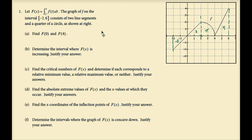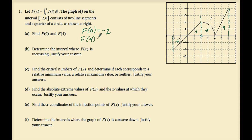Let uppercase F of x equal the integral from 2 to x of lowercase f of t dt. The graph of f on the interval negative 2 to 6 consists of two line segments and a quarter circle, as shown. The lower endpoint of integration is 2 — our starting point. Areas marked: this triangle is negative 2, this is positive 2, this quarter circle is pi, and this is 4. To find F of 0: starting at 2 and going back to 0, the area is 2, but moving backwards means the function value is negative 2. For F of 4, from 2 to 4 moving to the right, the area is pi, so F of 4 is pi.